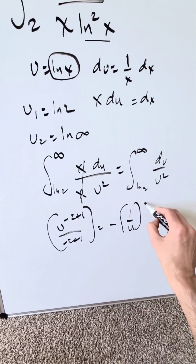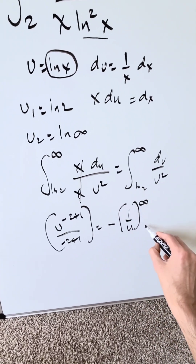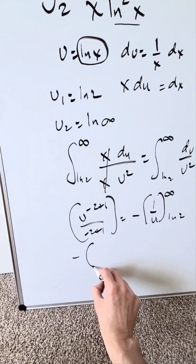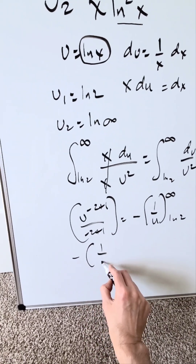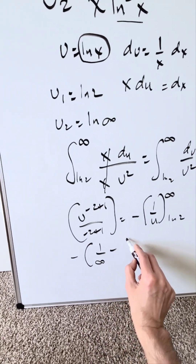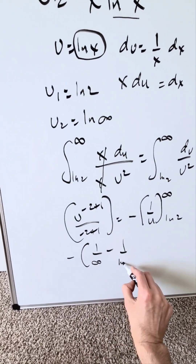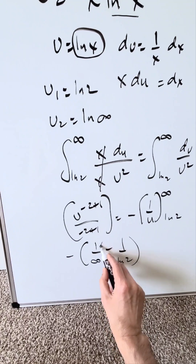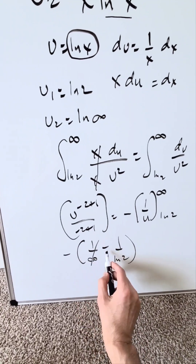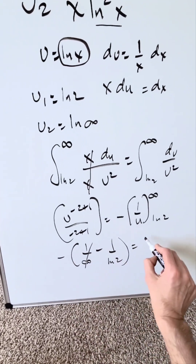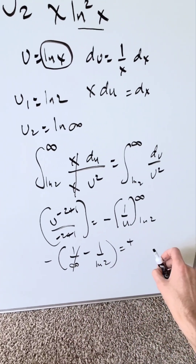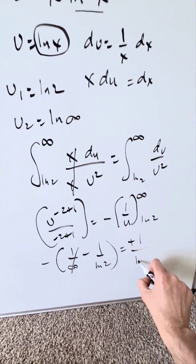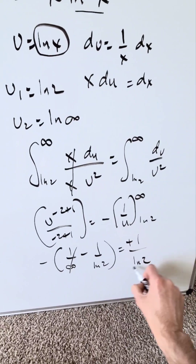Evaluating with upper limit infinity and lower limit natural log 2: you get minus 1 over infinity minus negative 1 over natural log 2. Since 1 over infinity is 0, and minus and minus gives a positive, the end result is positive 1 over natural log 2.